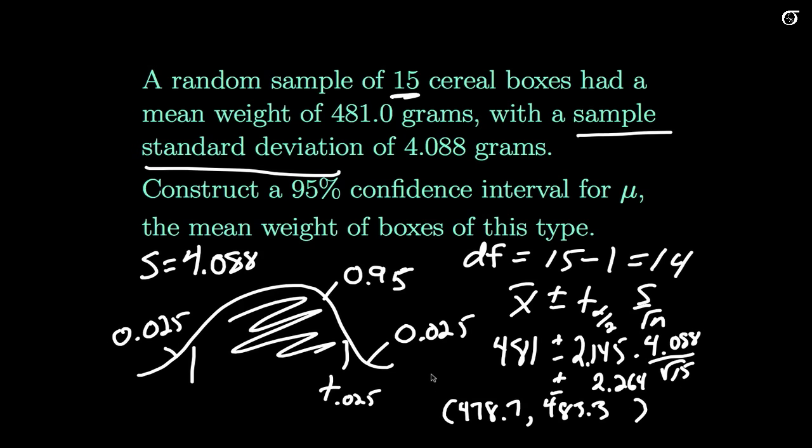So we can be 95% confident that the true value of mu, the true mean weight of cereal in boxes of this type, lies between these two values. Now one thing to keep in mind, had we incorrectly used 1.96 instead of 2.145, we would arrive at a smaller margin of error, a narrower confidence interval, but it simply would not have been correct, and we'd have been cheating a little bit.